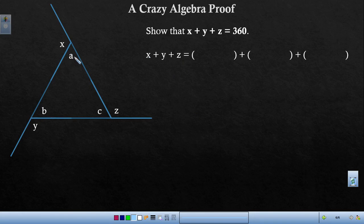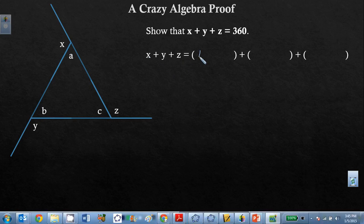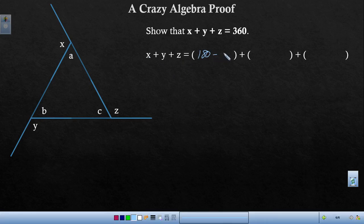x plus a is equal to 180, which means that x is equal to 180 minus a. And y is going to be 180 minus b. And z is going to be 180 minus c.